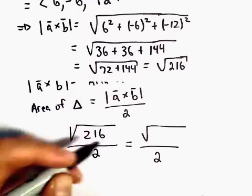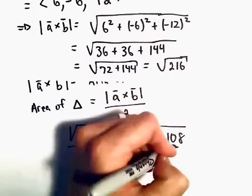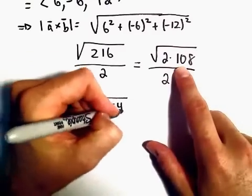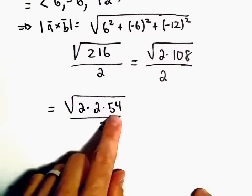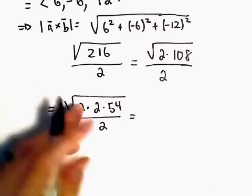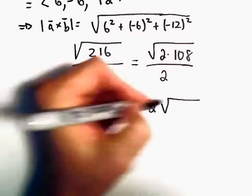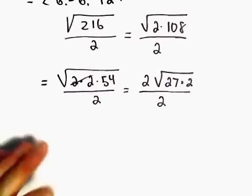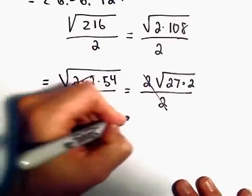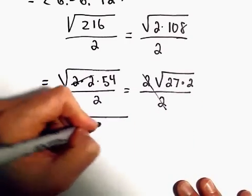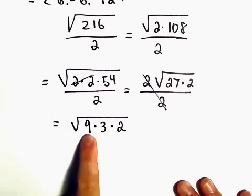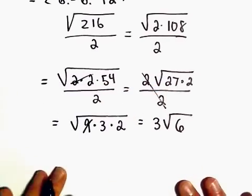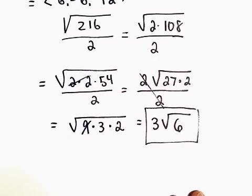So we can write 216 as 2 times 108. We can break down 108 a little bit further. So 108, we could write that as 2 times 54 all over 2. 54 we can break down further. We have 2 times 2, so this is a 4. I'm going to bring that out as a 2. The square root of 54, we can write that as 27 times 2. The 2s cancel. The square root of 27 times 2, we could write that as 9 times 3 times 2. The square root of 9 we can pull out. So the 9 will come out as a 3. We're left with 3 times 2, which I'm just going to multiply back together. So it looks like the area of our triangle would equal 3 times the square root of 6.